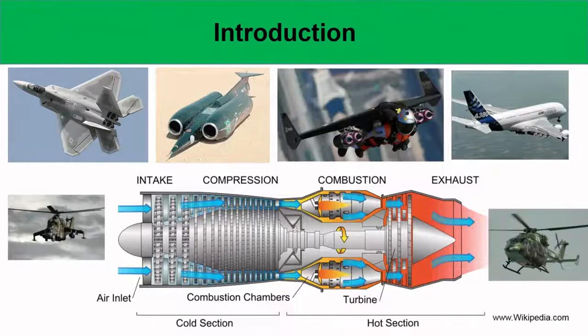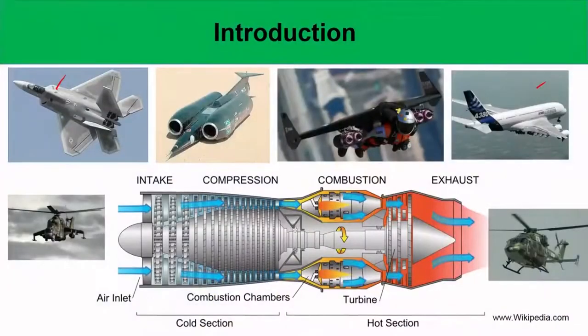The gas turbine engine, as we discussed in the introductory videos, is really the workhorse of aerospace propulsion — commercial or military. The gas turbine engine comes in different variants: there can be a turboprop, a turbofan, a turbojet, and also an afterburning turbojet.